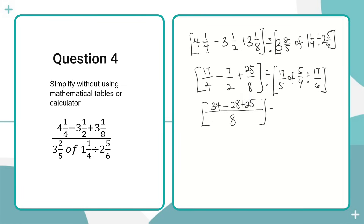Then we handle the right-hand side. We have 17 over five, and 'of' means multiplication, so we multiply by five over four. The division sign is changed to multiplication, so we multiply by six over 17.